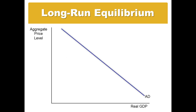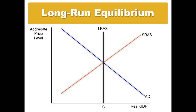When we put it all together, we see that in the long run, the short run aggregate supply curve, aggregate demand curve, and long run aggregate supply curve all intersect when we're at full long run equilibrium at price level P sub E and at potential output.